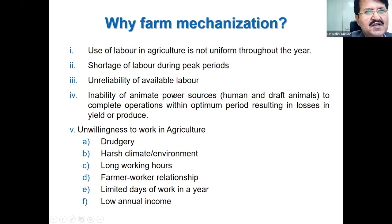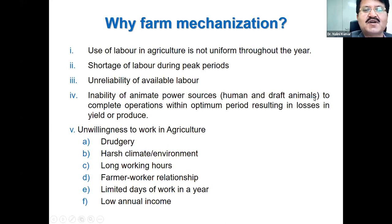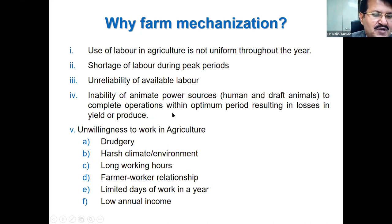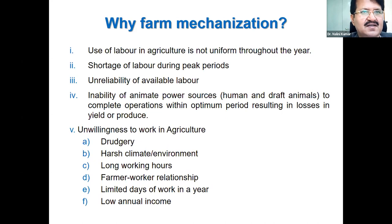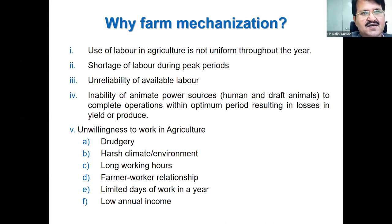To improve quality of work and efficiency of input use, we need reliable farm machinery. The inability of animate power sources — human and draft animals — to complete operations within the optimum period results in losses in yield. In the case of wheat, delay in sowing causes yield loss. With limited animal and draft power, we are not able to complete operations within the required period, resulting in huge loss of yield. With farm machinery, we can expedite work in a very short span of time and save deterioration in crop quality.